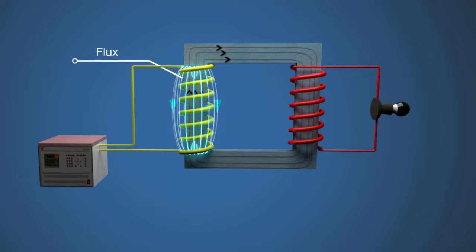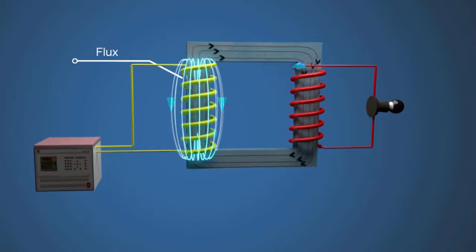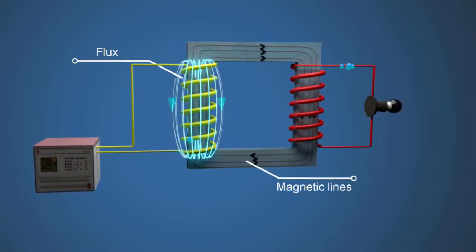This magnetic flux will travel through the magnetic circuit formed by the steel core, and therefore we see magnetic lines of force flowing in the core.